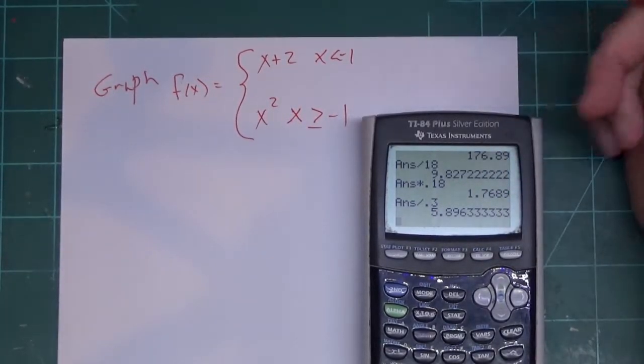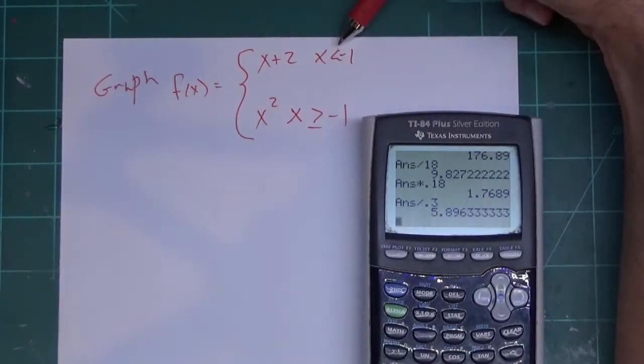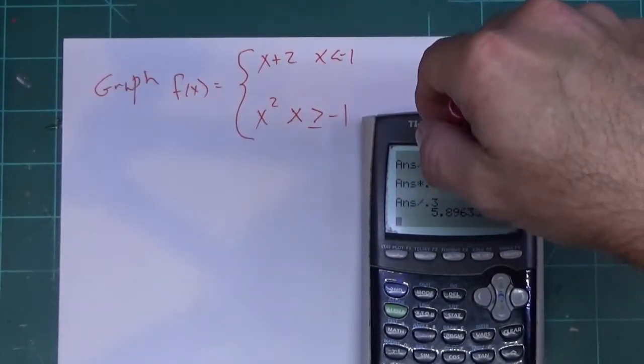A couple of warnings. This has an equal sign, so it gets graphed with a solid dot. This does not, it's going to get graphed with an open dot. This doesn't know that and won't graph with solid or open dots.